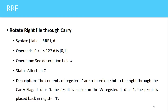The next instruction is RRF, which is used to rotate the file register through carry on the right side. The syntax is RRF F, D, where F is any file register — a memory location or SFR — and D is the destination bit. The status affected is only the carry flag. The value in the file register is rotated right by one bit position, and the result is stored in either the working register or the file register depending on D.